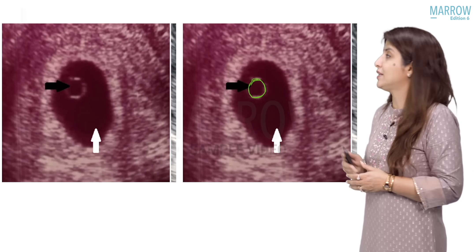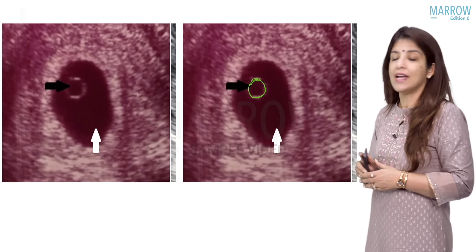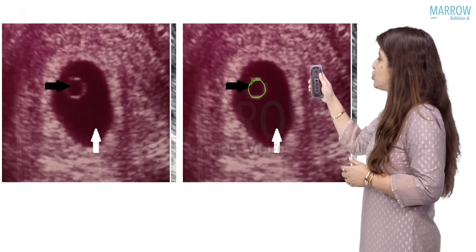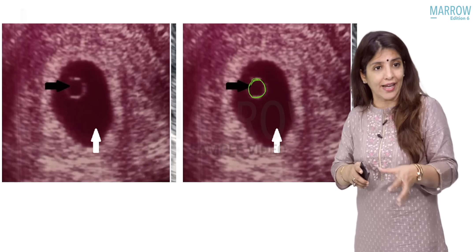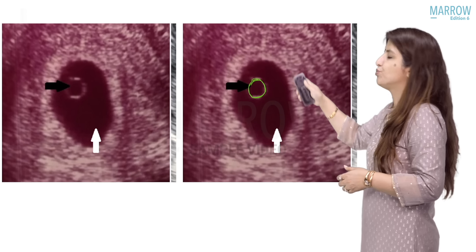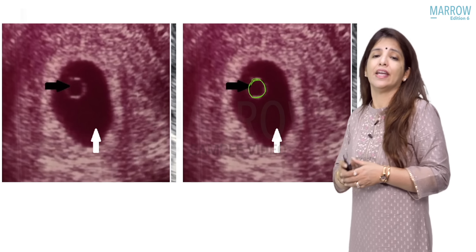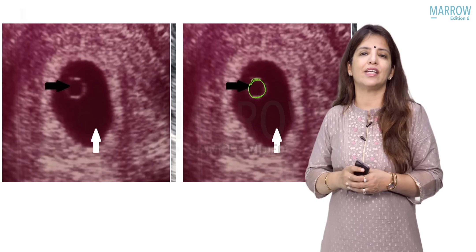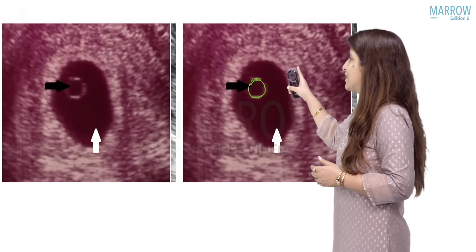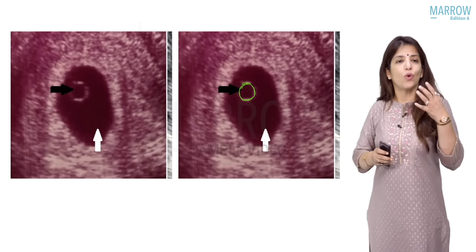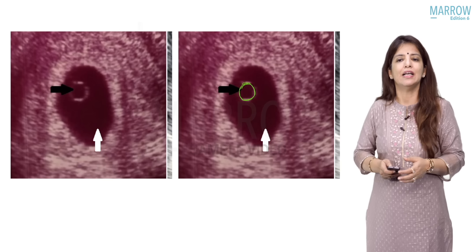In this image, the white color arrow is pointing towards the gestational sac, and the black color arrow is pointing towards a small echogenic circle present inside the gestational sac — that is the yolk sac. In the next image on the right-hand side, the yolk sac is highlighted in green. The yolk sac appears like a bleb inside the gestational sac.